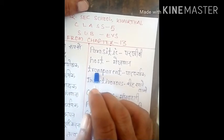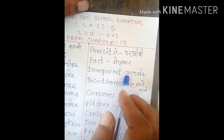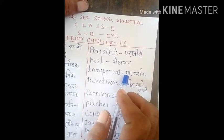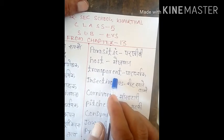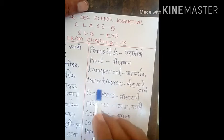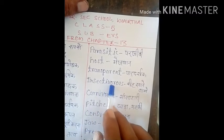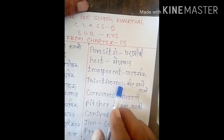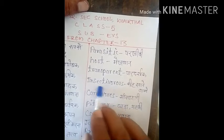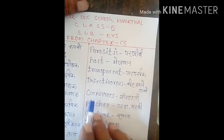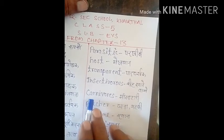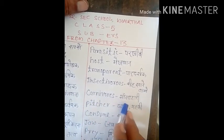Next word is 'transparent', T-R-A-N-S-P-A-R-E-N-T. Transparent hoti hai 'pardarshal'. Next word is 'insectivorous', I-N-S-E-C-T-I-V-O-R-O-U-S. Insectivorous hote hain jo keet khaane wale hote hain plants — un ko hum insectivorous kehte hain. Insectivorous plants are carnivores, matlab maas khaate hain. Next word is 'carnivores', C-A-R-N-I-V-O-R-E-S. Carnivores means 'maasahari'.